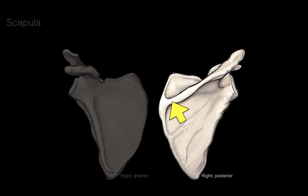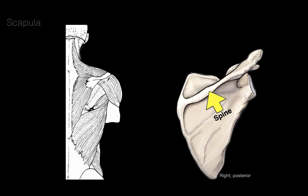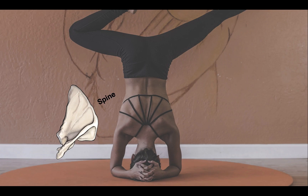The next structure is this ridge all along the back of the posterior portion of the scapula. Anatomists asked: what do we call this spiny-like structure? This spine all along the back of the scapula — this is easy: we'll call it the spine of the scapula. It's important because the trapezius muscle anchors to it to help support and move the scapula, as well as the deltoid, which anchors to it to help move the humerus. That's what the spine of the scapula looks like in surface anatomy.